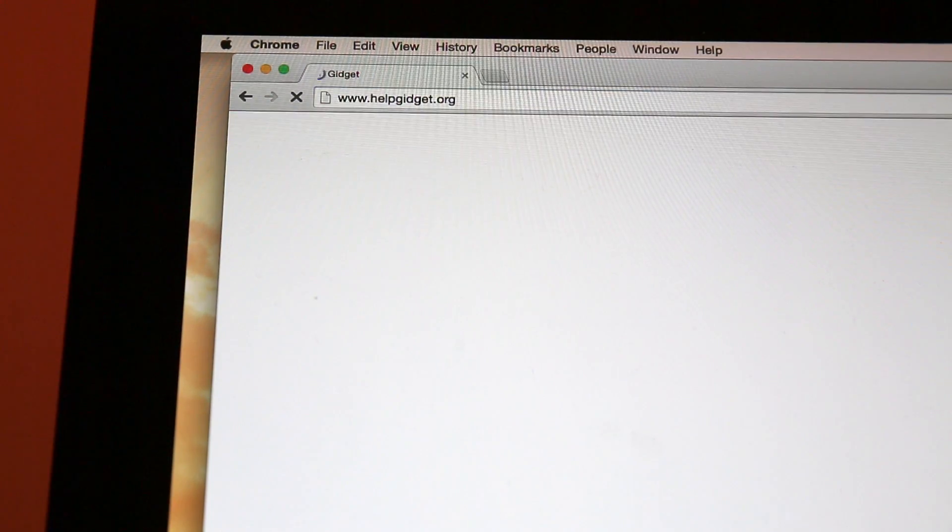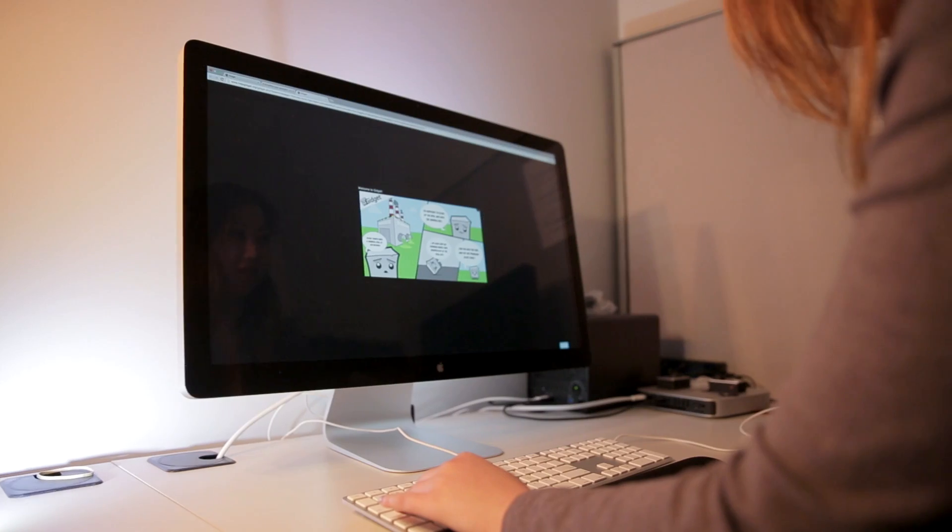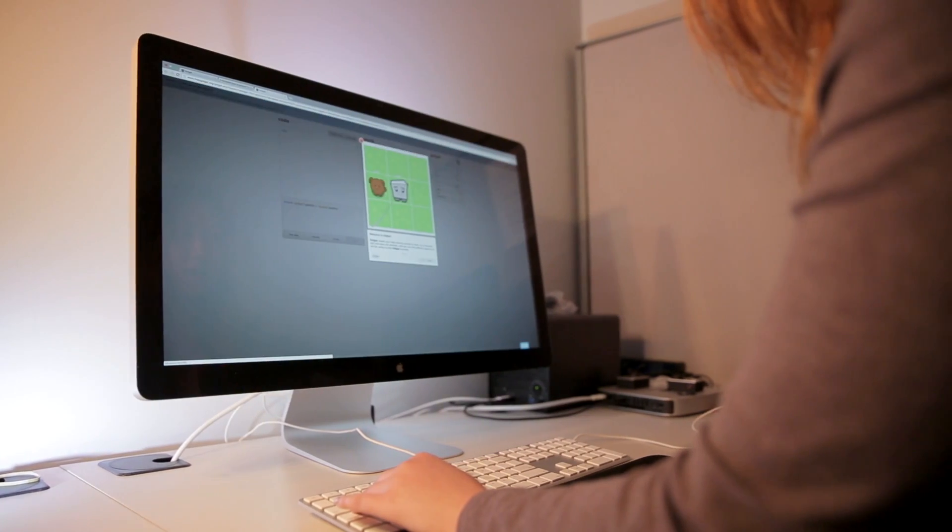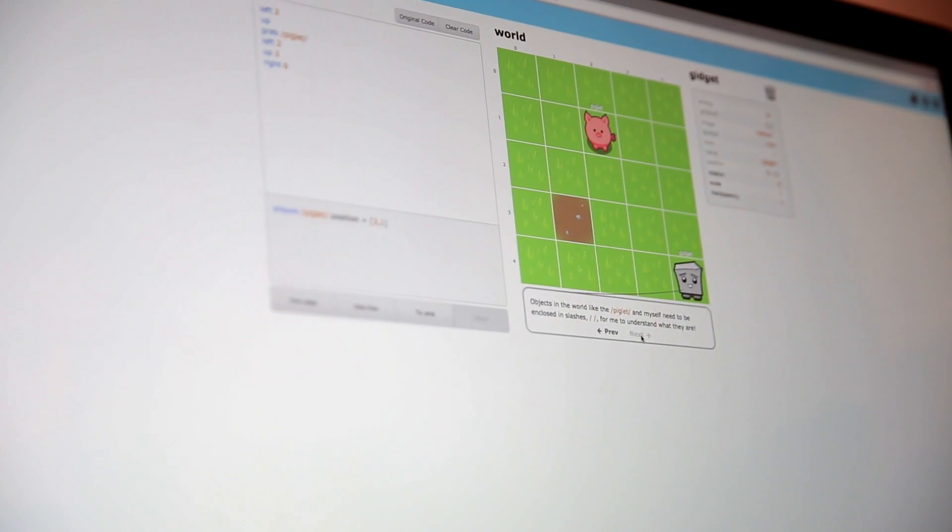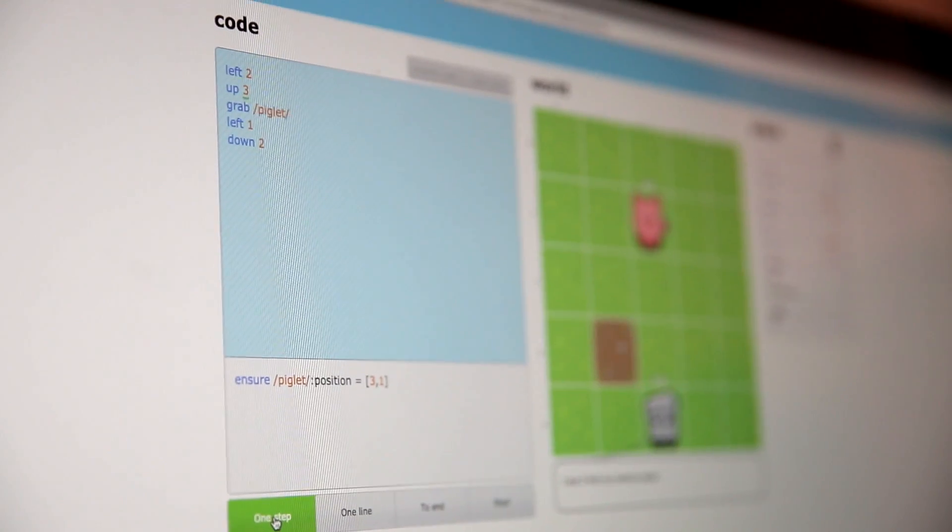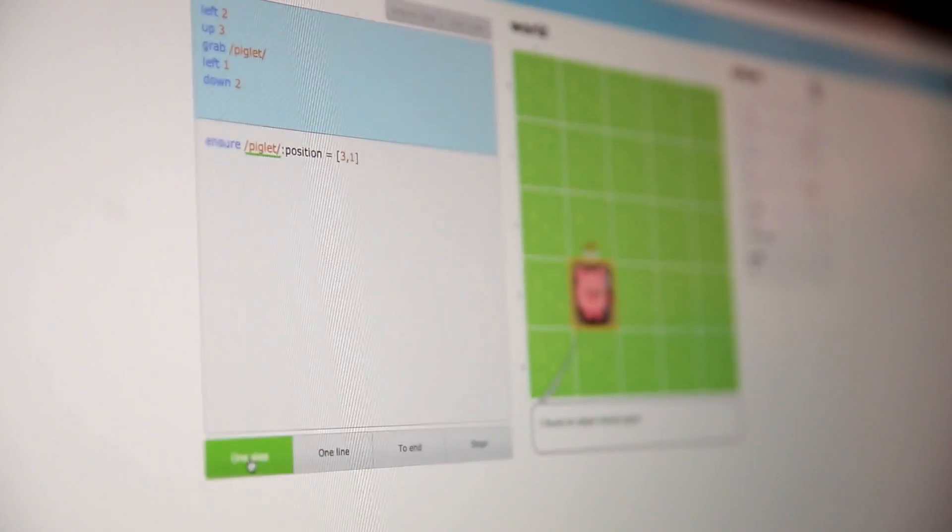So I made a video game called Gidget. Gidget is a freely available game that's online, free to play, that was designed to engage and teach people computer science. In the game, you're helping a robotic character solve its missions to clean up a chemical spill and save animals.